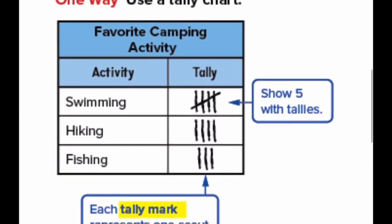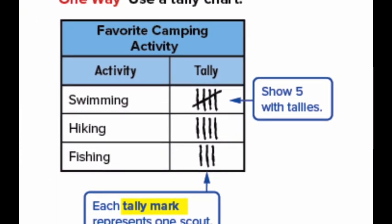One way is by using the tally chart. Let's take a look at this tally chart. The title is 'Favorite Camping Activity.' The activities are swimming, hiking, and fishing. For swimming, we will write five tally marks because five scouts voted for swimming. For hiking, we wrote four tally marks because four scouts voted for hiking. For fishing, we will write three tally marks for the three scouts. Each tally mark represents only one scout.